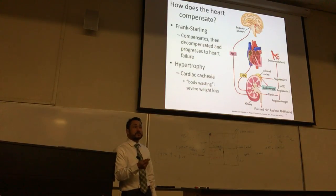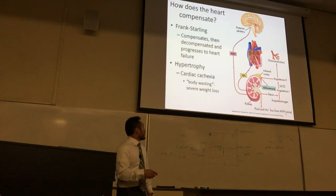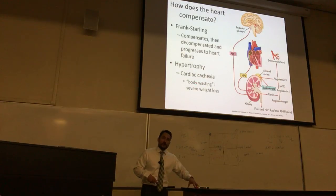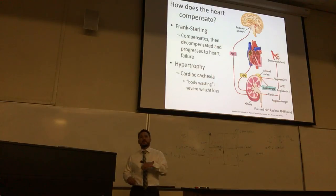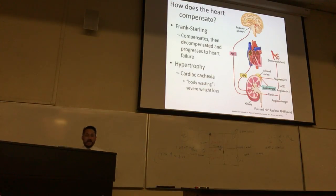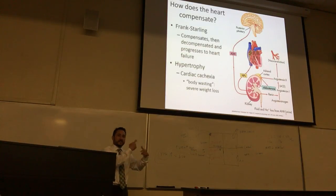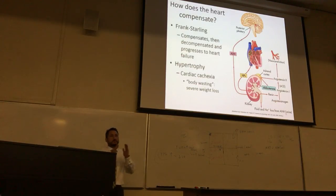As the heart hypertrophies it takes more energy — it's essentially exercising to a greater extent than normal. In patients with end-stage chronic heart failure, there's a condition known as body wasting — cardiac cachexia — because the extra metabolic demand of the heart to work and beat sucks much more ATP. The heart is like an exercising organ 24/7, and patients start losing dramatic amounts of weight over time.